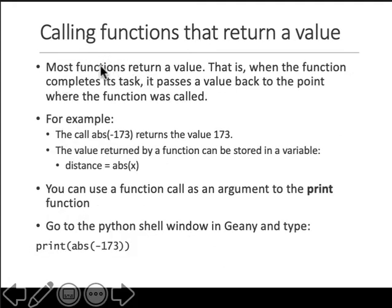And then functions return a value. This we will talk about later. But let's look at this line down here, the last line, which is print abs something. So abs is one function that will give you the absolute value of whatever is inside the parentheses. So abs of minus 173 yields 173, and then you say print that thing on the screen.